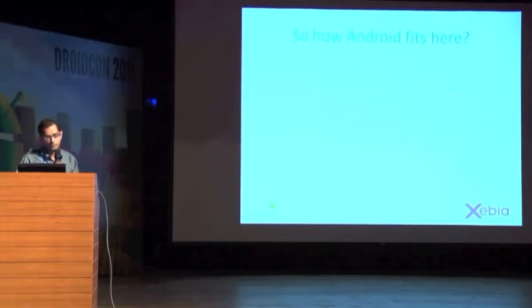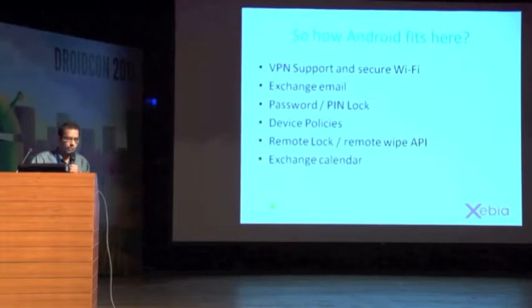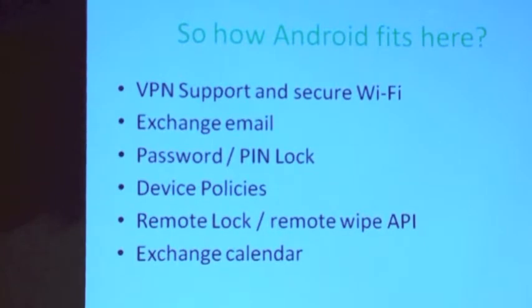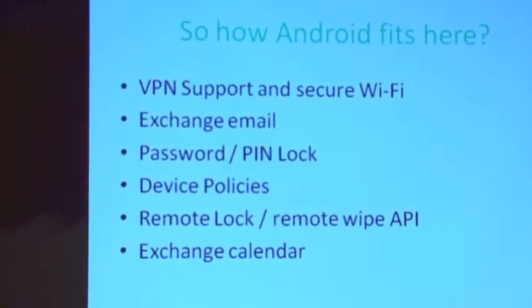Where is Android headed in enterprise? Right from the release of Donut and Cupcake, Android has been introducing enhancements for enterprise solutions — including VPN support, secure Wi-Fi, Exchange email, password and PIN lock, device policies (introduced in Froyo), remote lock, remote wipe API, Exchange calendar, Exchange ActiveSync, and NFC for reading, writing, and peer-to-peer support. Through Gingerbread and ICS, more enhancements include securing emails and calendars.